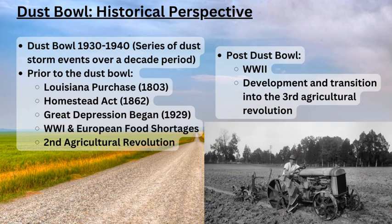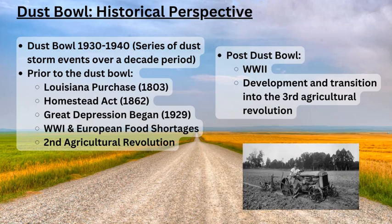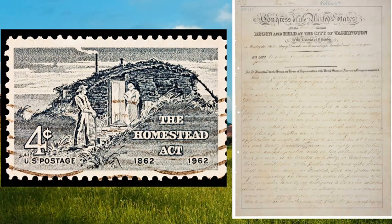America obliged and started to produce more food, primarily in the Great Plains. People had originally come to the Great Plains in the early to mid-1800s due to Lincoln's Homestead Act of 1862.